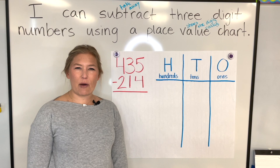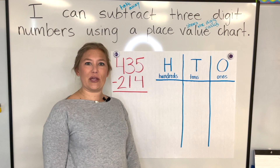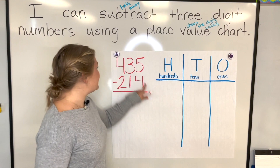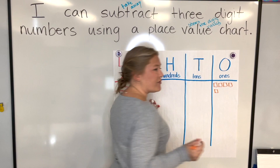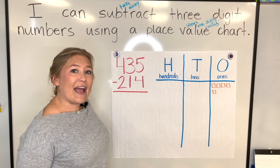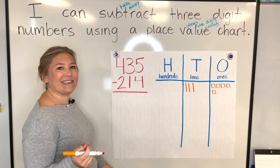Does anyone remember where we should start — in the hundreds, tens, or ones place? In the ones place. So let's start in the ones place. I see a five, so I'm going to draw five ones in the ones place. Then we move to our tens place. How many do we have in the tens place? A three — so I'm going to put three tens. Then moving to our hundreds place, we have four hundreds.